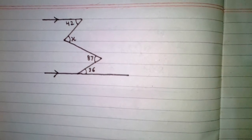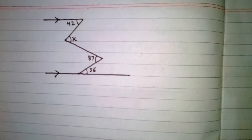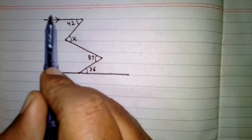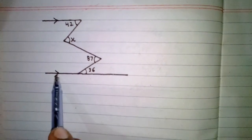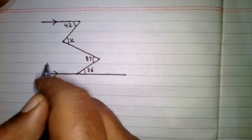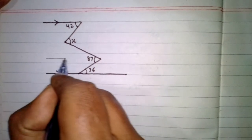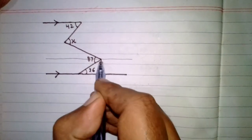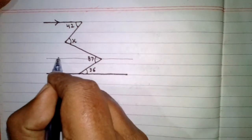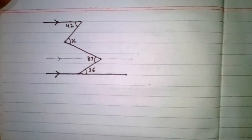In this video we are going to find out the angle X. We have two parallel lines, so first of all we can draw a line passing through this point and parallel to these lines.